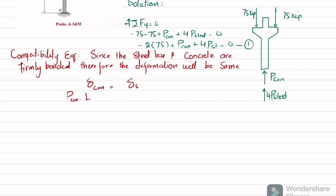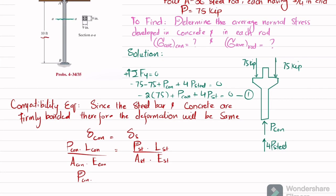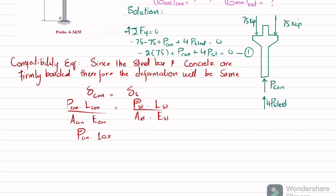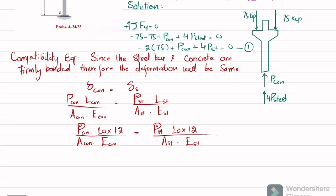We know deformation equals P·L divided by A·E. So I will write: P_concrete × L_concrete / (A_concrete × E_concrete) = P_steel × L_steel / (A_steel × E_steel). The column length is 10 feet, which converts to 120 inches. So: P_concrete × 120 / (A_concrete × E_concrete) = P_steel × 120 / (A_steel × E_steel).